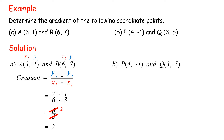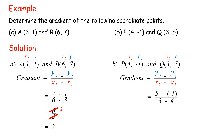B: P(4, −1) and Q(3, 5). Gradient equals y2 minus y1 over x2 minus x1, equals 5 minus negative 1 over 3 minus 4, equals 6 over negative 1, equals negative 6.